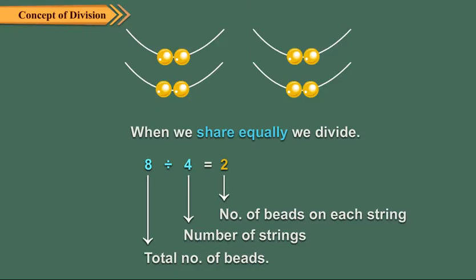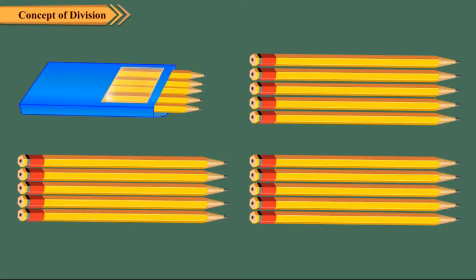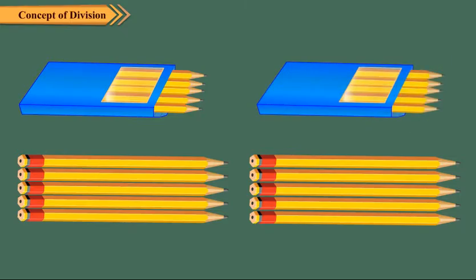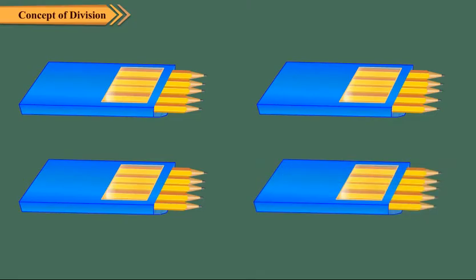Let us now take an example of equal grouping. We have 20 pencils. We want to put five pencils in each packet. How many packets will we need? We first put five pencils in one packet, five more in another packet, then five more in yet another packet, and finally five more in another packet.